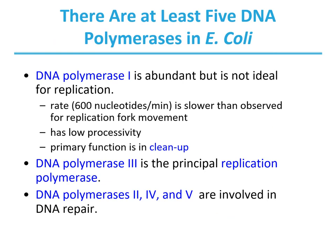There are at least 5 DNA polymerases in E. coli. DNA polymerase 1 is abundant but is not ideal for replication — it has a polymerization rate of about 600 nucleotides per minute, low processivity, and primarily functions in cleanup. DNA polymerase 3 is the principal replication polymerase. DNA polymerases 2, 4, and 5 are involved in DNA repair. These enzymes differ in gene sequence, molecular weight, number of subunits, and exonuclease activities. DNA polymerase 1 has both 3' to 5' and 5' to 3' exonuclease activity. Polymerization rates vary from 1 nucleotide per second to 1,000 nucleotides per second, and processivity varies from 1 to more than 500,000.